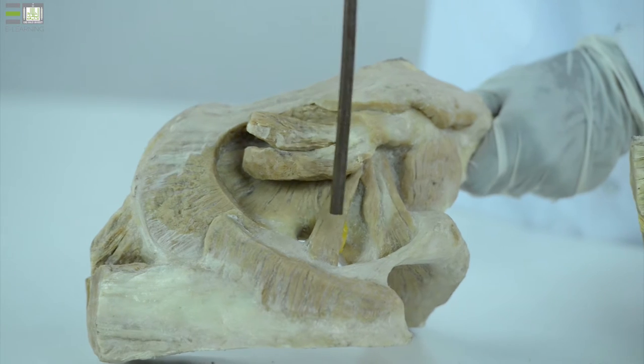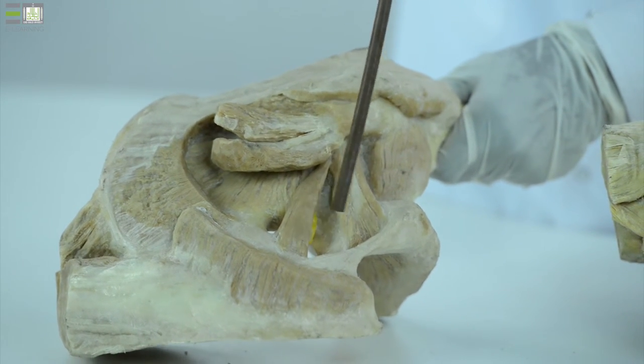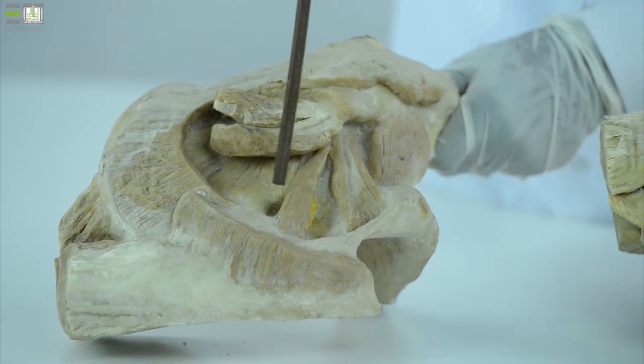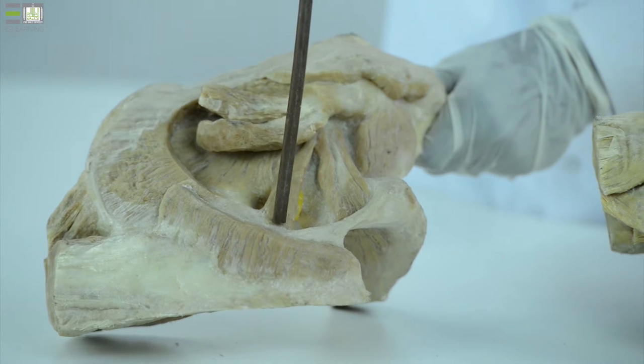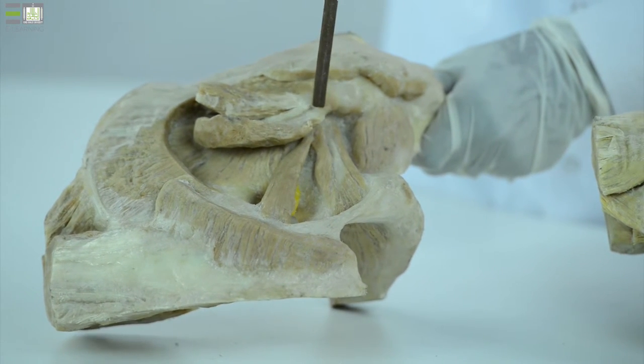Also appearing in the gluteal region are the greater sciatic foramen and the lesser sciatic foramen. We can see here the piriformis pass through the greater sciatic foramen to be attached to the greater trochanter.